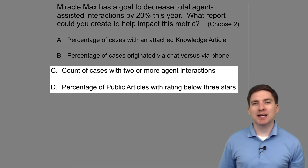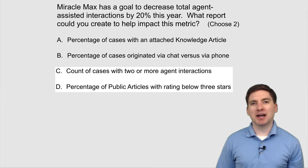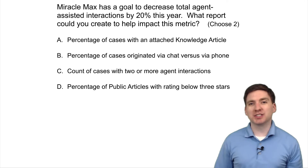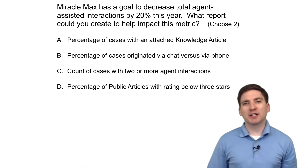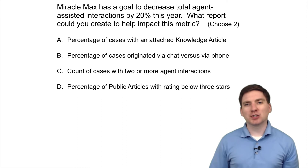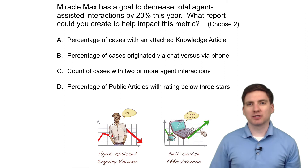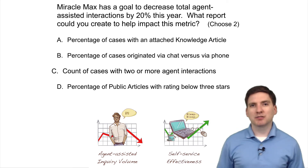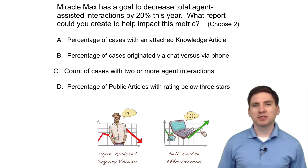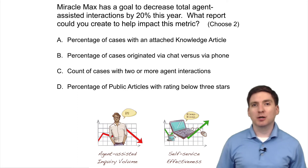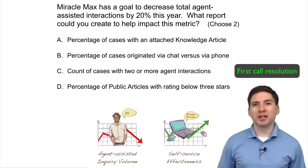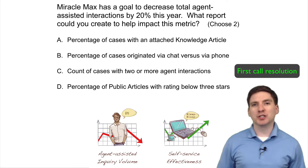The correct answers are C and D. Since the question states that Max wants to decrease agent-assisted interactions, we need to look for answer choices that would specifically measure either agent-assisted inquiry volume or the effectiveness of self-service. C, count of cases with two or more agent interactions, is a good choice because that report could help Miracle Max improve his first call resolution. By investigating why those cases required more than one agent interaction and acting on that information, he can hopefully reduce his total agent interactions.